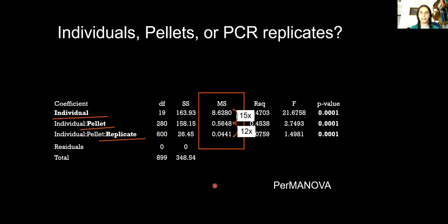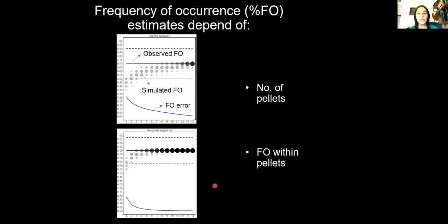We conducted simulations in which we randomly subsampled the number of pellets analyzed. The error in the frequency of occurrence decreased not only with the number of pellets analyzed but also with the frequency of occurrence within the individuals. If a certain prey is present in only one of the 15 samples you will need to analyze a lot of pellets until you reach the true frequency of occurrence. But if you have a prey species present in all 15 pellets, you only need three or four pellets until you reach the true frequency of occurrence.